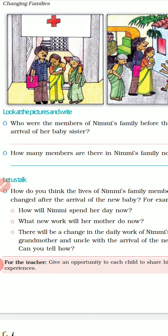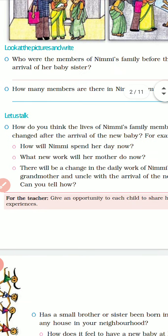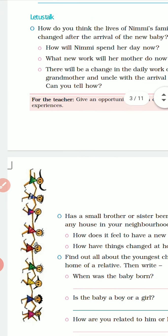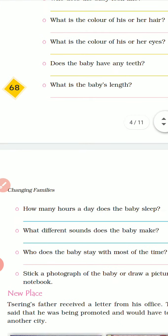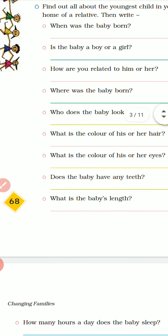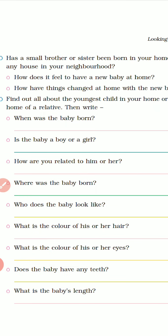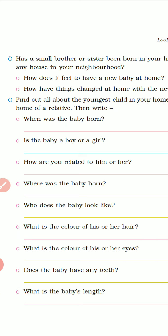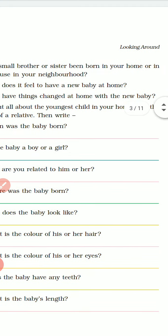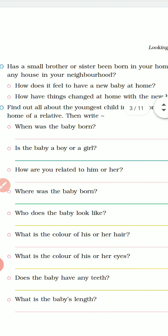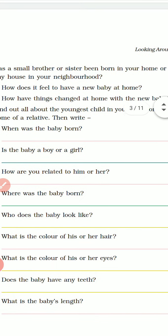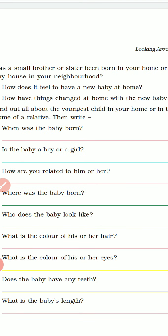So like this you have to answer all the questions in the textbook. Now see, the questions are there which you can answer: When was the baby born? Is the baby a boy or a girl? How are you related to him or her? Find out about the youngest child in your home and in the homes of your relatives, then write down these answers.